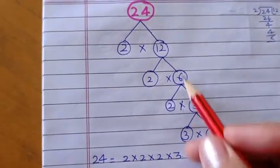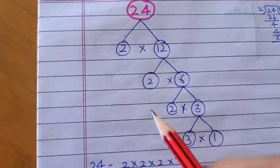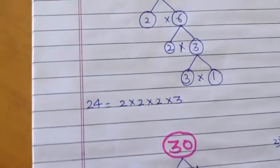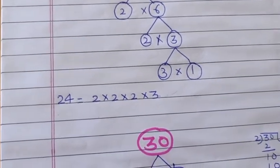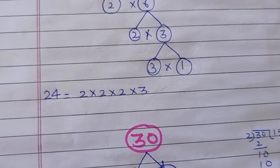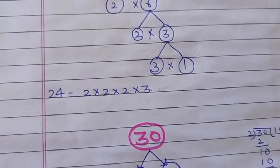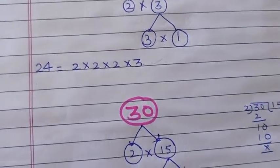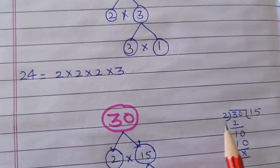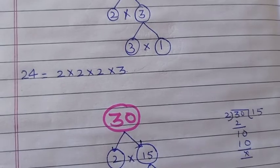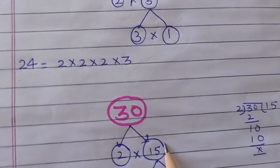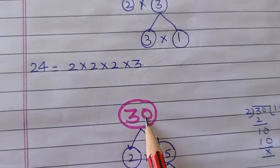So in this way we make a factor tree. Let's take one more example. For example we have 30. We have 30. Again we will check it for 2. If you know then very well, otherwise again we will divide it and see. We will divide it from 2. So we can see that it completely divides. Now the answer is 15.